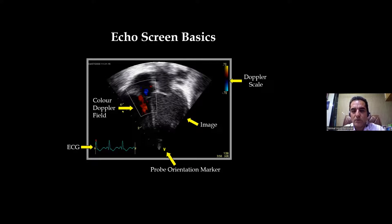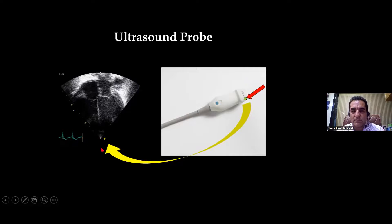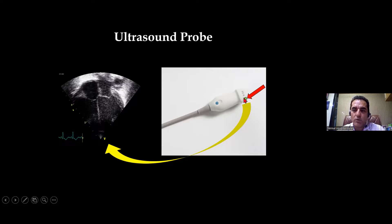This is the color window, this is the probe orientation marker, and this is your probe — the phased array or sectoral probe looks like this. This is what you see as the probe marker. The probe marker corresponds with the probe orientation marker on the screen. The probe orientation marker remains static and always stays on the left side; the only thing that moves is the probe marker.